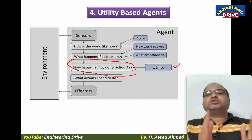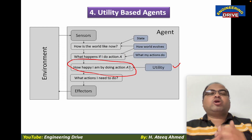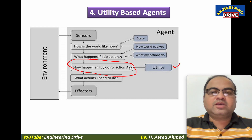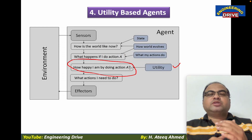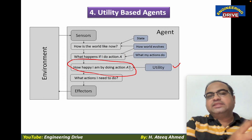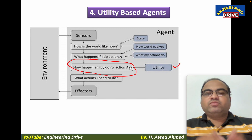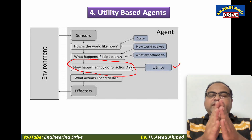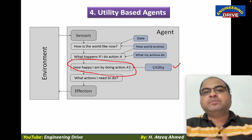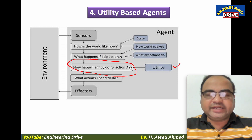History says that utility-based agents will have a lot of success and they are much more successful compared to the other three types of agents. With this, we have completed the types of agents topic in artificial intelligence.